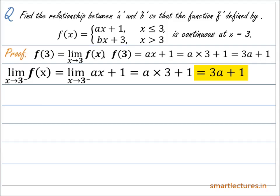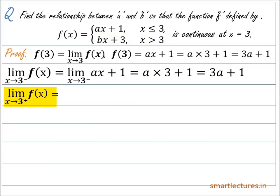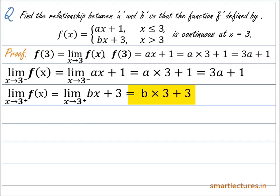Now let's find the right-hand limit. The right-hand limit is limit as x approaches 3 from the right of f(x). Since f(x) = bx + 3 when x is greater than 3, the right-hand limit equals limit as x approaches 3 from the right of bx + 3, which equals b×3 + 3 = 3b + 3.